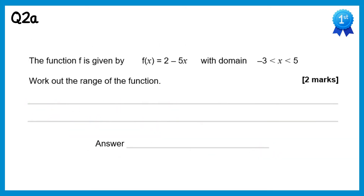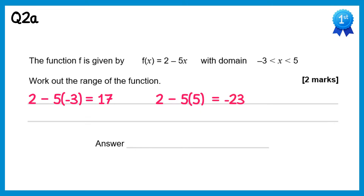In this question the function produces a straight line graph, so I'm just going to substitute in the values from the domain. Starting with negative 3: 2 minus 5 times negative 3 equals 17. Then with 5: 2 minus 5 times 5 is negative 23. So the range of this function f(x) is between negative 23 and 17.